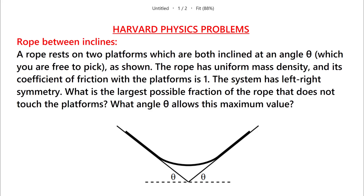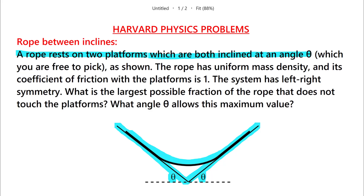Hello friends. This is a Harvard Physics problem called 'Rope between the Inclines.' We have a rope resting on two platforms, both inclined at angle theta. This angle is what you are free to pick and have to find out.